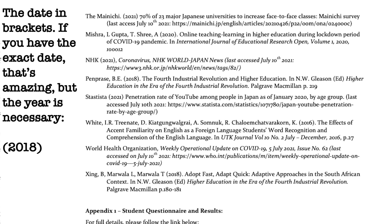Next, in brackets, write the year when the paper or article was first published. If it is a newspaper article online, it might even have the day and the month, which would be great. But the year is the most important thing.